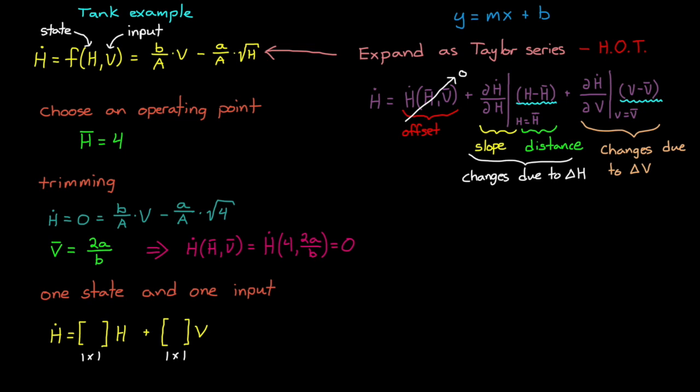But we can simplify this further since the function's value at the operating point is 0. Now we can solve the partial derivatives. And to simplify this result even further we can just relabel where we call 0. So instead of the height being measured from the bottom of the tank, for example, we can measure it from the operating point.